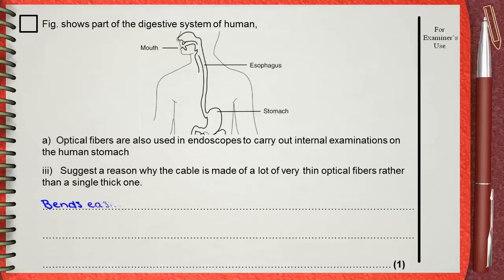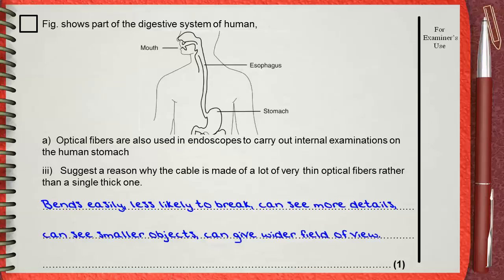This makes the optical fibers bend easily, less likely to break, can see more details, can see smaller objects, can give wider field of view. This question needs only one of them to get the one mark of the question.